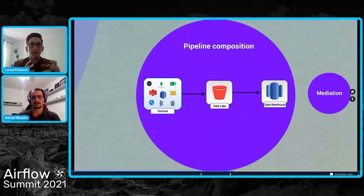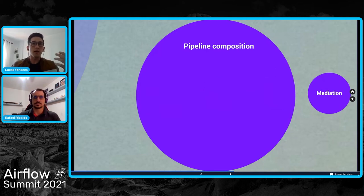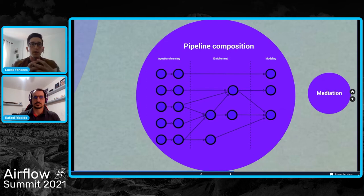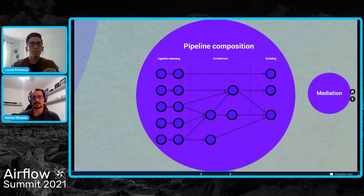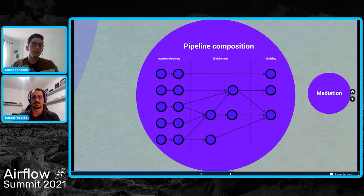We have data that is extracted from the source to the data lake. In the data lake, it is cleaned, enriched, and modulated with various other data sources, and for doing that we have a complex pipeline. We think of our pipeline as a composition of a macro graph with internal dependencies — the arrows here represent the dependencies. We can't process everything at the same time, of course, because there are some jobs that depend on another, like an enrichment that first needs the data to be cleaned, or a modeling step that needs the data to be enriched.